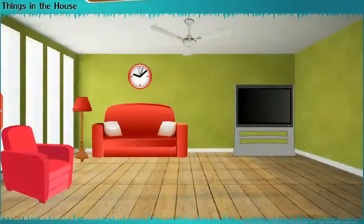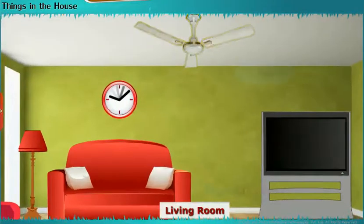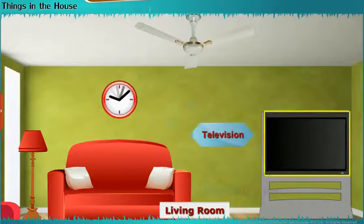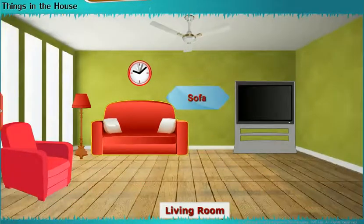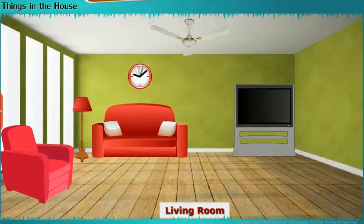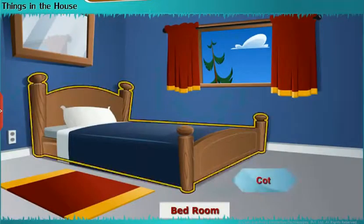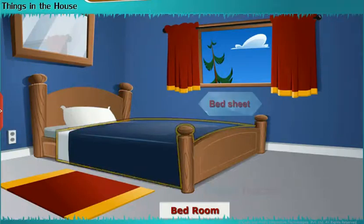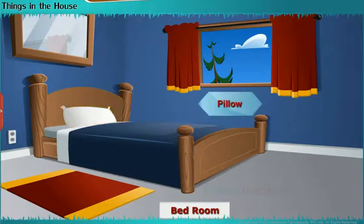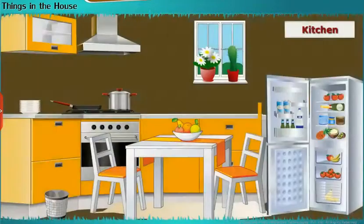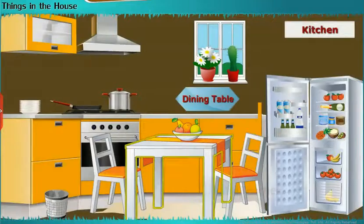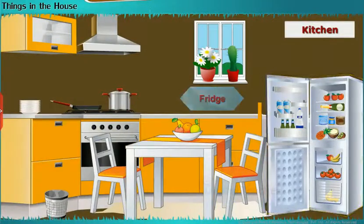Let us learn about the things present in our house. Living room: Fan, Clock, Television, Sofa. Bedroom: Cot, Bed sheet, Pillow, Bed Mat. Kitchen: Fridge, Stove, Dust Bin.